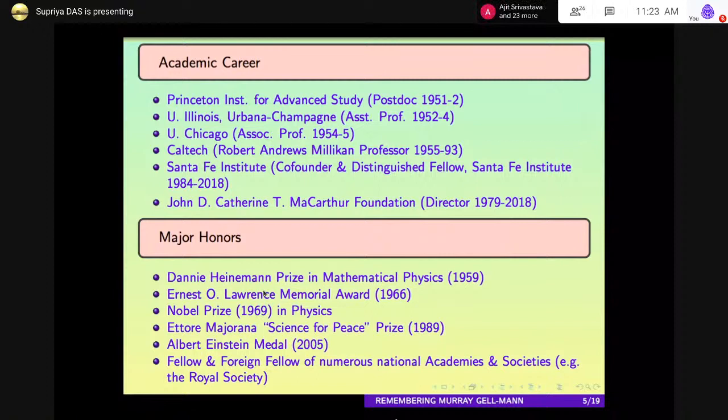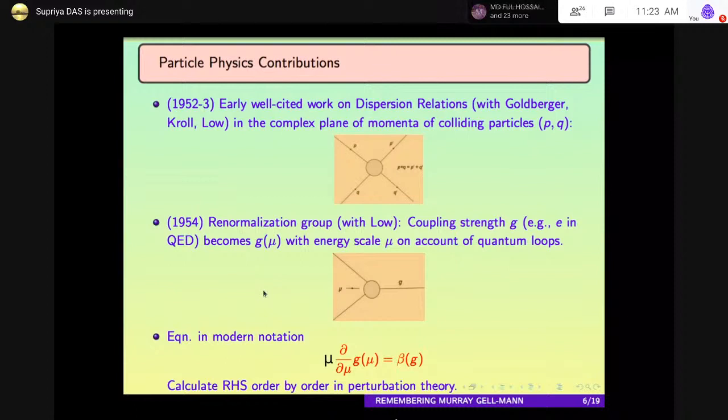After that, Caltech offered him the Robert Andrews Millikan professorship. From 1955 to '93, he had been there. He worked as a colleague of Richard Feynman and people like that. Then in 1993, he left Caltech. He was already at the Santa Fe Institute, which he had co-founded, and a distinguished fellow there. From 1984 he was there, but from '93 he was there full-time, except that he had also been made a director of the John D. and Catherine T. MacArthur Foundation. He received major honors: the Danny Heinemann Prize in Mathematical Physics in 1959, the Ernest Orlando Lawrence Memorial Award in 1966, the Nobel Prize for Physics in 1969 - a solo Nobel Prize, the Ettore Majorana Science for Peace Prize in 1989, the Albert Einstein Medal in 2005. He was also a fellow and foreign fellow of numerous national academies, like the U.S. National Academy of Sciences, the Royal Society, and so forth.